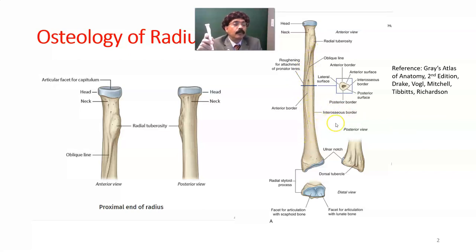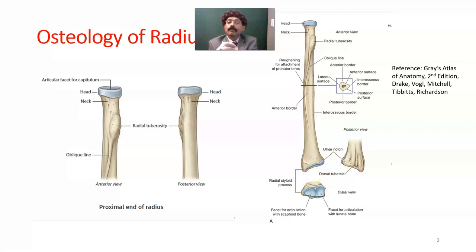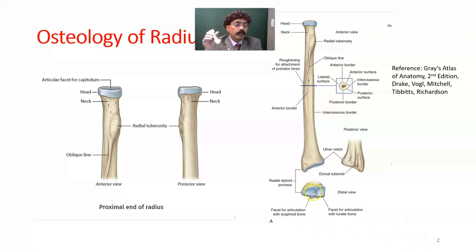Going to the lower part of the radius: the anterior surface and posterior surface has the dorsal tubercle. On the inferior surface, you get two facets — the triangular facet for the scaphoid, and the semilunar or quadrangular facet for the lunate. So this is the anterior border, posterior border, and interosseous border. The anterior surface lies between the anterior border and the interosseous border.